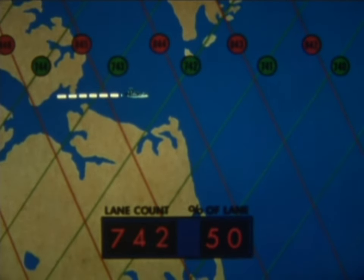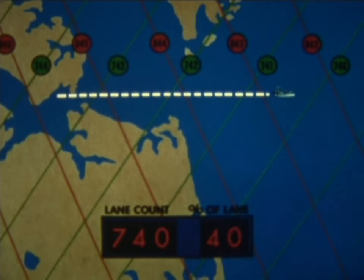Once the counters have been correctly set, the lane count continues automatically, with the numbers of the counters continuously indicating the position of the ship as it moves across the different lanes indicated on the charts.